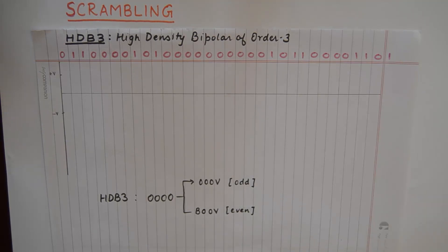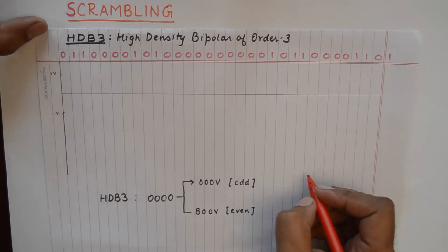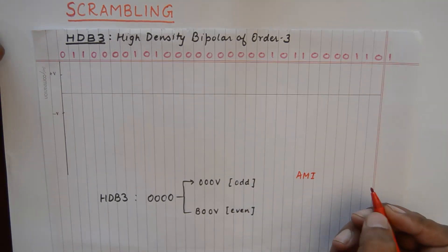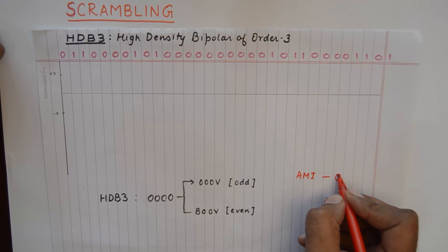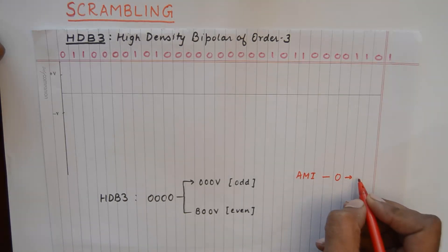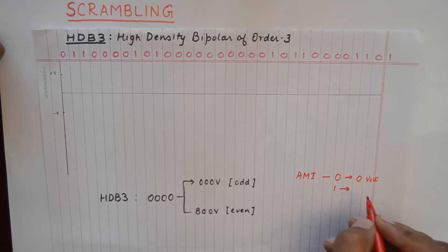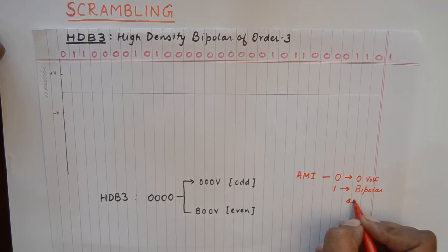Before we start this tutorial, it is essential that you understand what is alternate mark inversion line coding technique. So in AMI, a 0 is represented using a 0 volt and a 1 is represented using a bipolar alternating voltage.